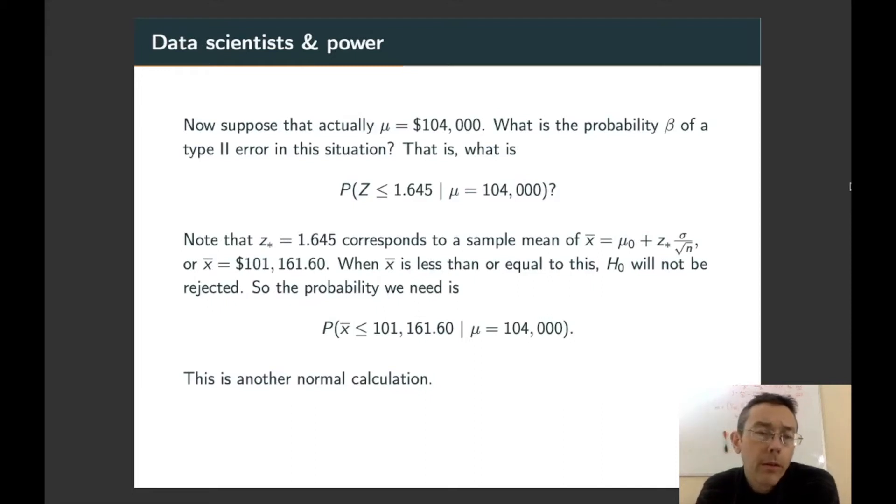So suppose that we later find out that the actual starting salary is $104,000. What's the probability beta of a type 2 error in that case? In other words, given that the population mean is $104,000, what's the probability of getting a z-score outside of the rejection region that we just saw? In other words, what's the probability of not rejecting the null hypothesis in this situation where the null hypothesis was false?